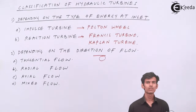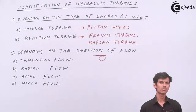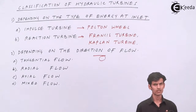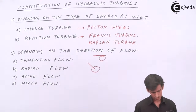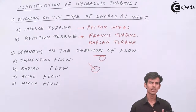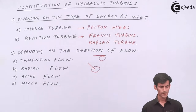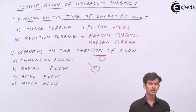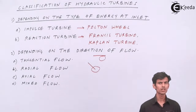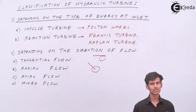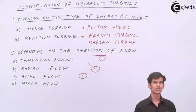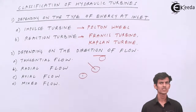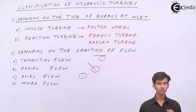Next is radial flow. Radial flow is a type in which the water enters radially — the direction of the jet is radial. Next is axial flow. An axial flow turbine is a turbine in which the flow is axial, that is along the axis of the shaft. As shown in the diagram, the runner has flow passing perpendicular to the paper, which means it is along the axis.